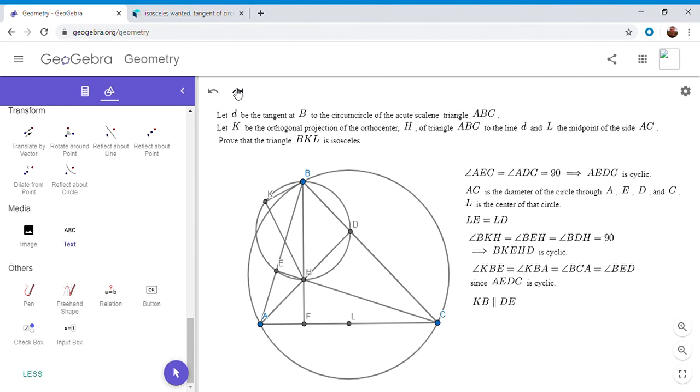So then that means that KB has to be parallel to DE, because those two angles, KBE and BED, are alternate interior angles. And if that's true, then as we wanted,